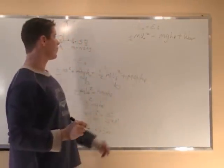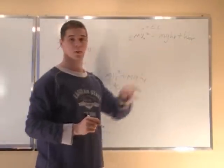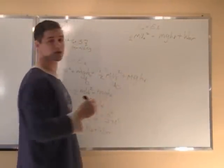Alright, so we know 1/2 m v-naught squared, we know mgh, we need to find the work done. Work is force times distance.